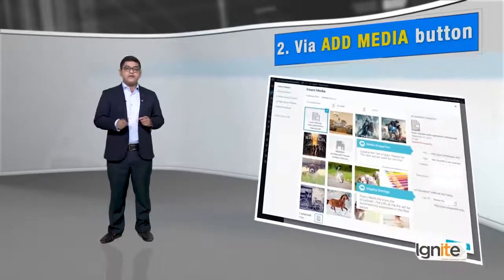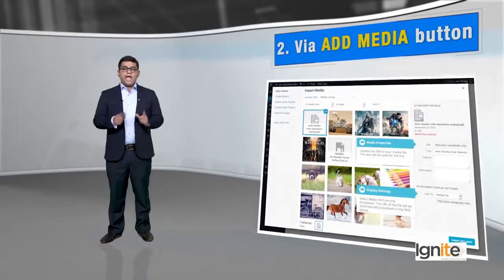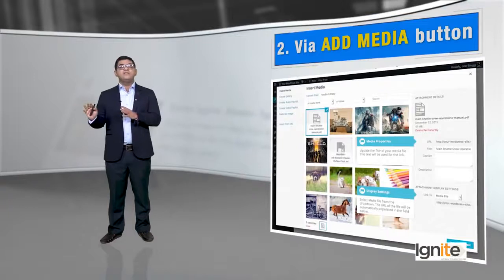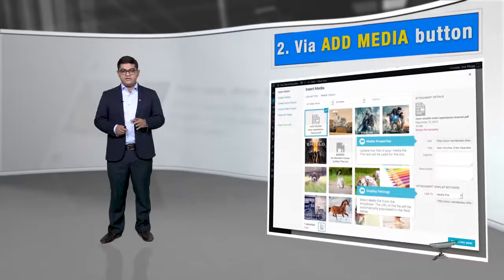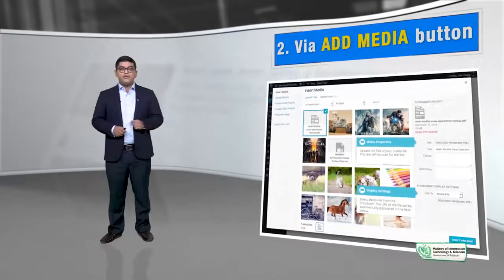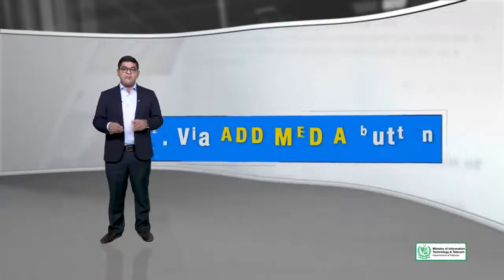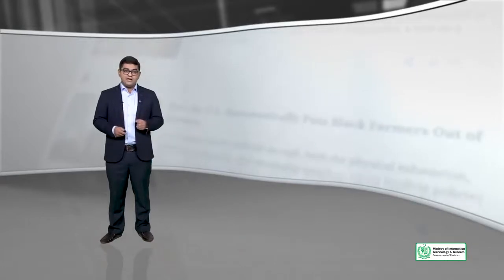Doosra tariqa yeh hai ke aap Add Media button pe click karen. Aur Add Media button pe, jab aap image ko select karte hai, toh right side pe jo aapke options hain, those options will actually show you ke aap us image ko kis se link karna chahte hai — ya aap image ko ek custom URL se link karna chahte hai, ya direct uski badi image ki file se link karna chahte hai, ya aap usko ek attachment page se link karna chahte hai. Teen options hain jo aapko WordPress dega when it comes to linking media.